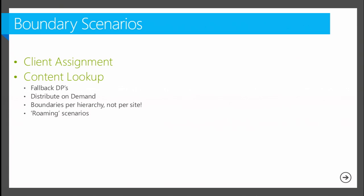Then there's a scenario we can enable called fallback, which I'll explain. Then there's a distribute-on-demand scenario we can enable. And here's a point for content lookup throughout all of this: boundaries are not per site — they are per hierarchy. You can leverage boundary groups wherever you need them. And for those who are familiar with previous versions of Config Manager, the term roaming probably will come to mind as you see me going through some of these demos. We don't use the term roaming in Config Manager 2012 really anymore, but it really is roaming — for those of you who understand what that means, it's a natural thought process.